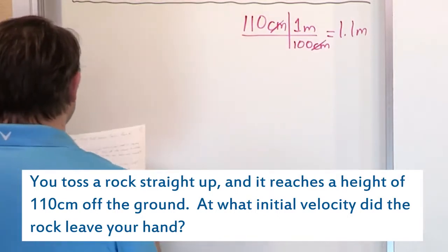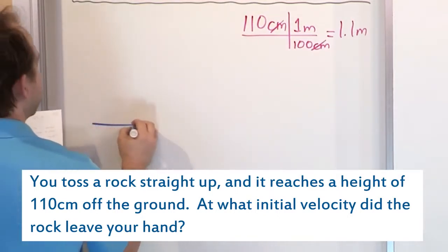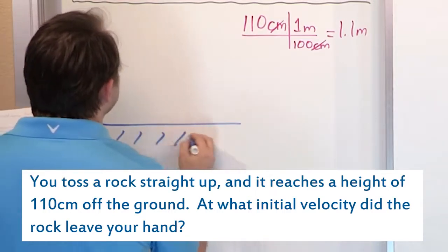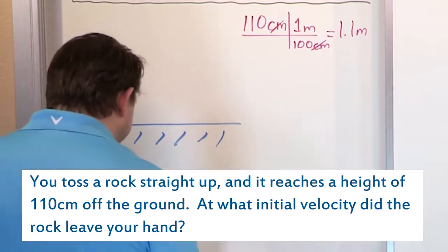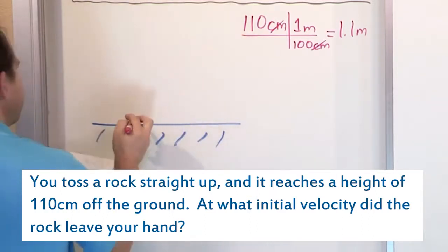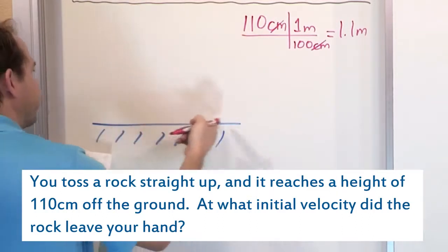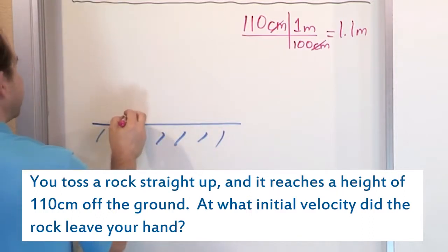So then we have to draw a simple little picture here. We have the ground. I'm going to call that the ground. And I could draw a stick figure person or whatever, but I'm not going to do that. I'm just going to draw this rock that basically starts, we're going to say it starts at ground level, even though there's really a person holding it. We're going to say it starts at ground level.